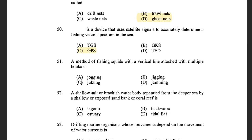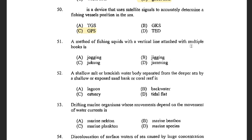Next question: A method of fishing squids with a vertical line attached with multiple hooks is known as — options are Jogging, Jigging, Junking, and Jamming. The answer is Jigging. Squid jigs are used to capture squids. The jigs are fluorescent and bright colored with artificial lures to attract the squids.